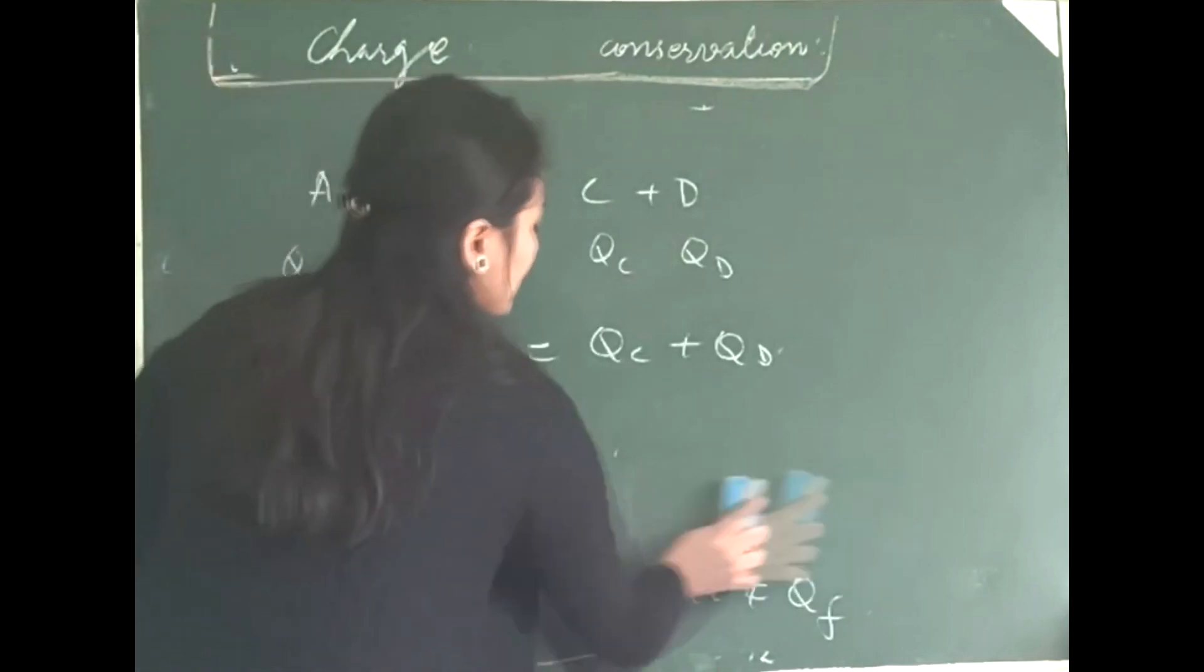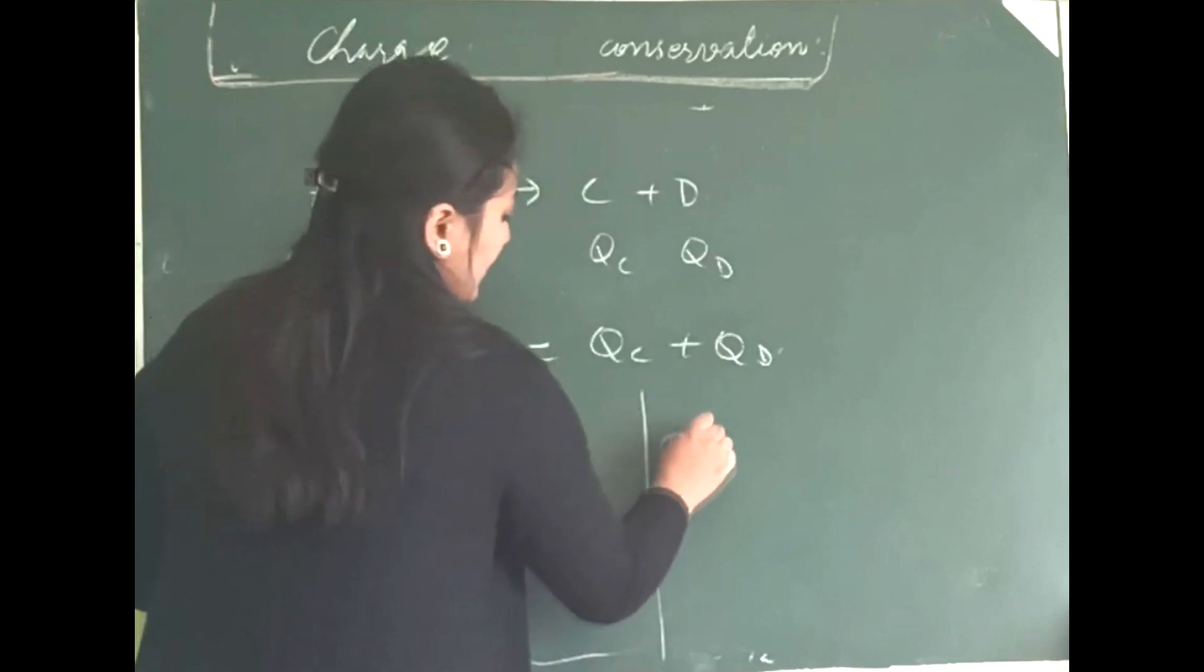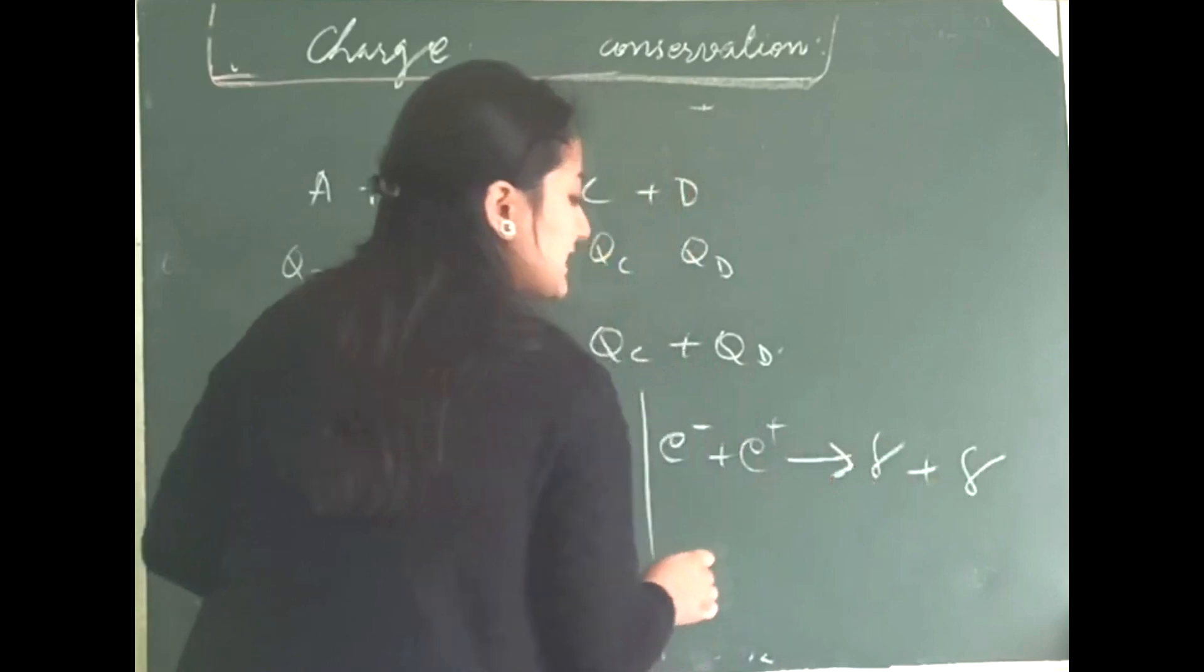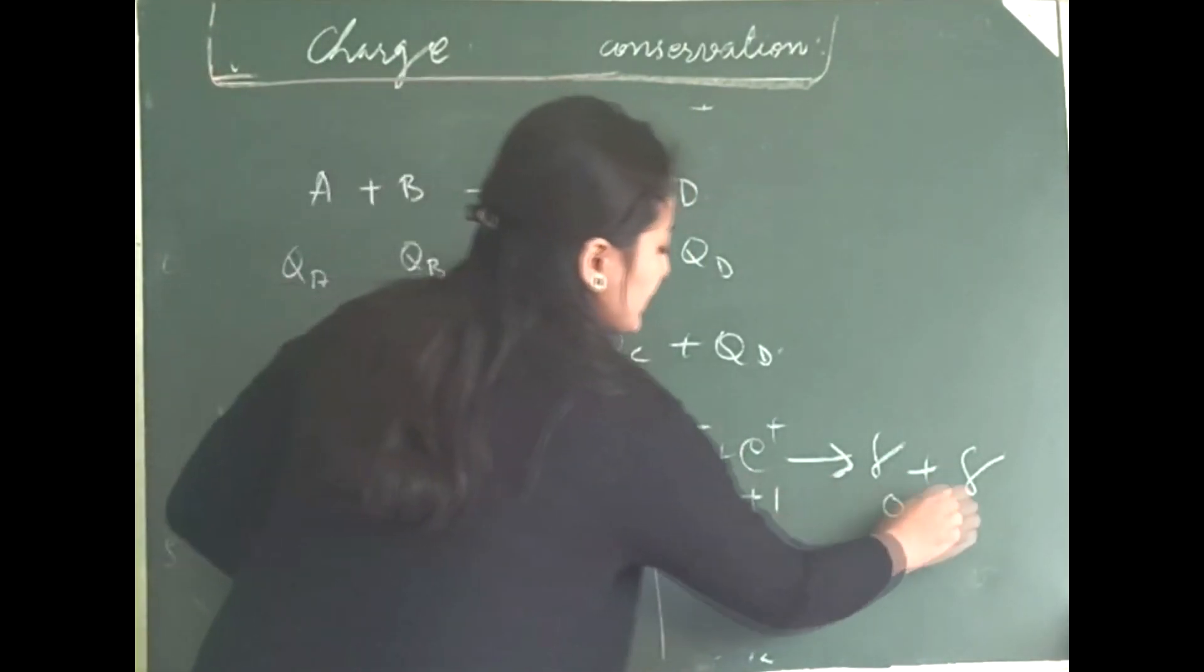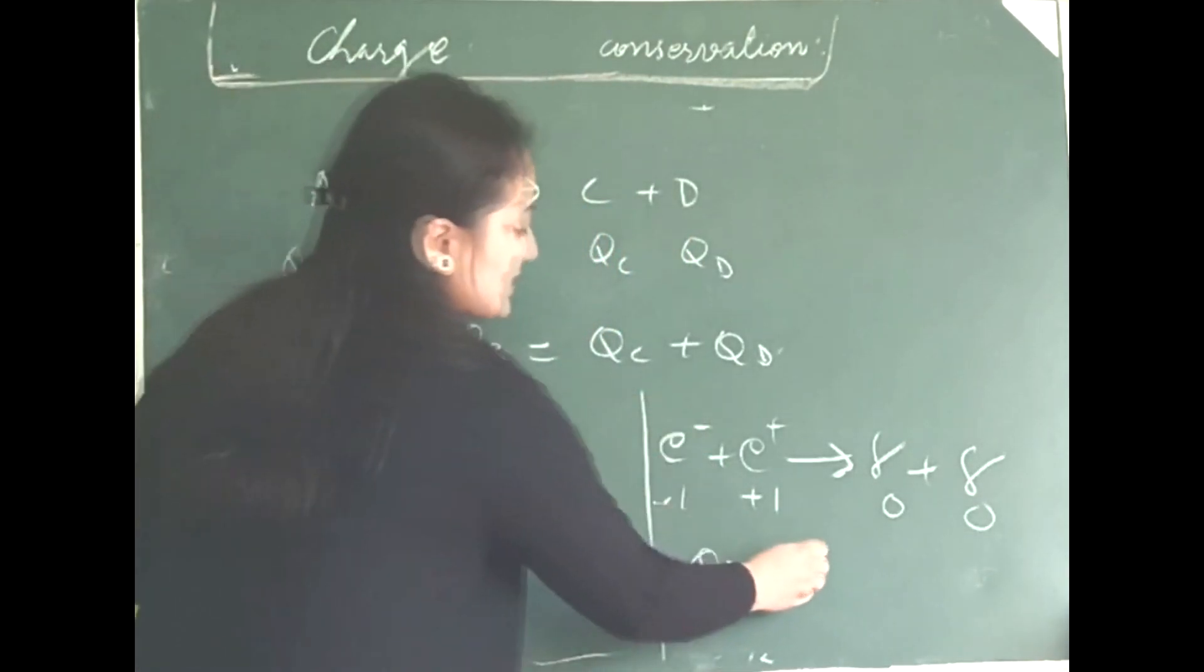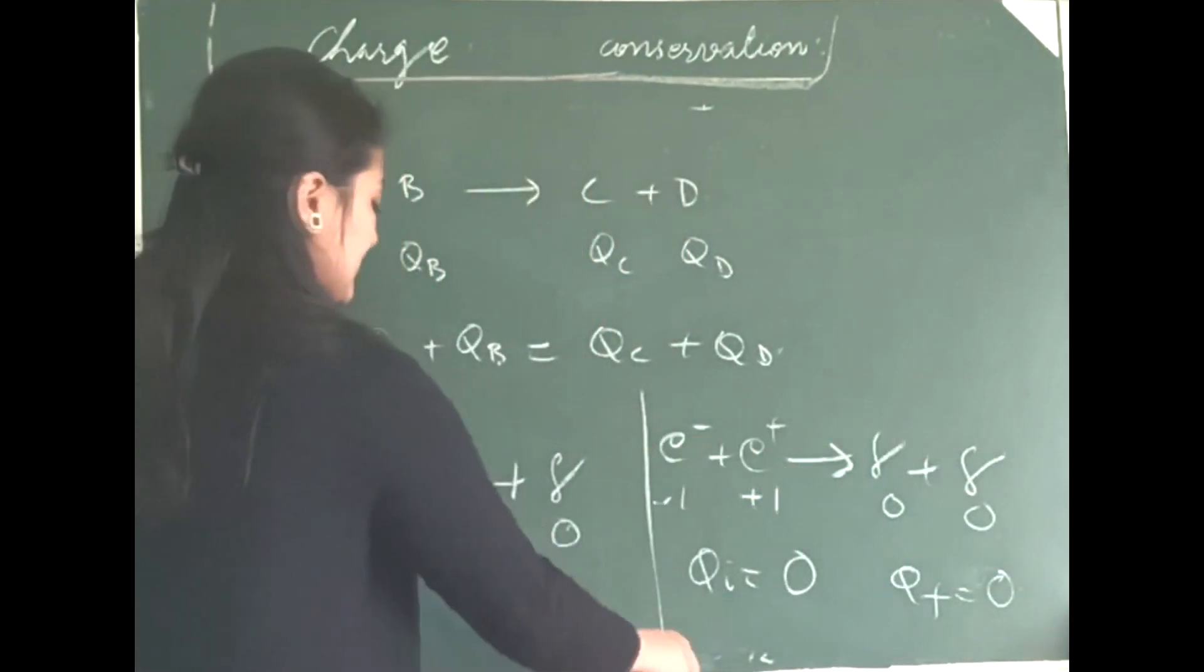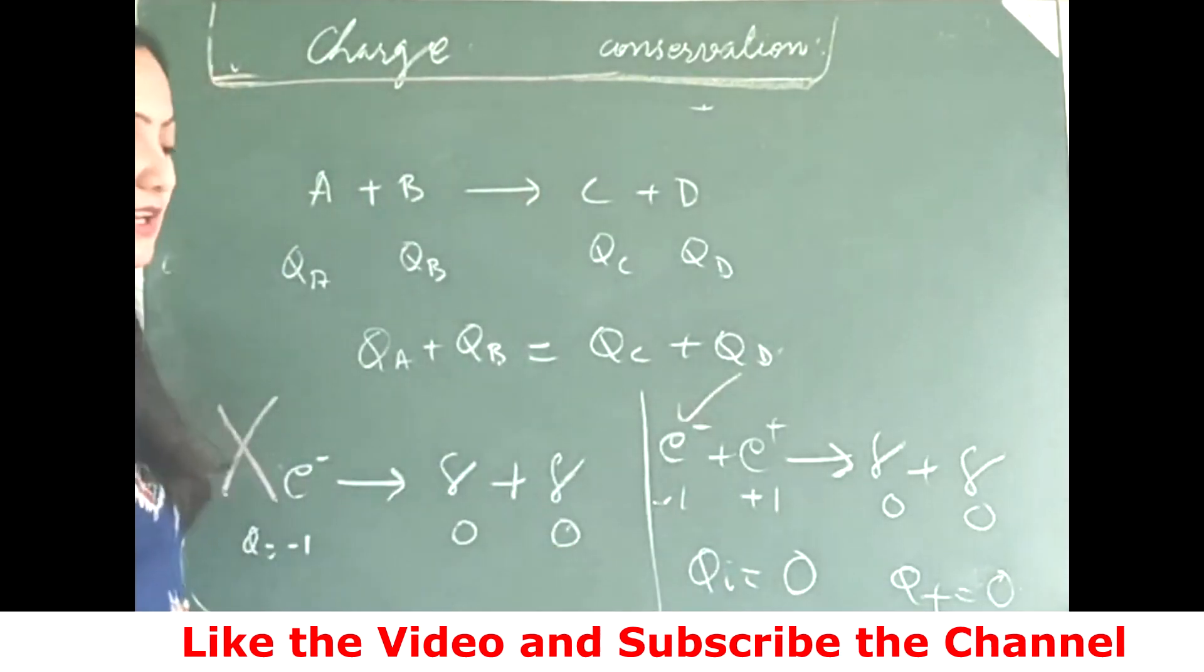Whereas, if you see your other one, this interaction is allowed. Why? Because you have minus 1, plus 1, 0, 0. So here, this side you have your Qi's as 0 and this side you have Qf as 0. So this interaction is allowed, whereas this is not allowed.